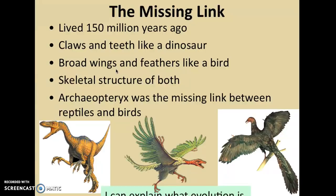Here is a bird, here's a reptile, and this is the Archaeopteryx. You can see the features they have in common and the things that are still different. That's why it's considered the missing link — because it does have similarities, and with its genetic features and the phenotype you're able to see, there are a lot of things in common with both organisms.